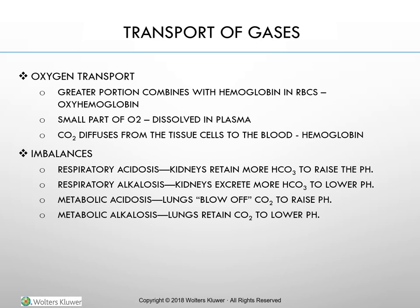Acid-base imbalances are compensated as follows: Respiratory acidosis — the kidneys retain more bicarbonate to raise the pH. Respiratory alkalosis — the kidneys excrete more bicarbonate to lower the pH. Metabolic acidosis — the lungs blow off CO2 to raise pH. Metabolic alkalosis — the lungs retain CO2 to lower pH.